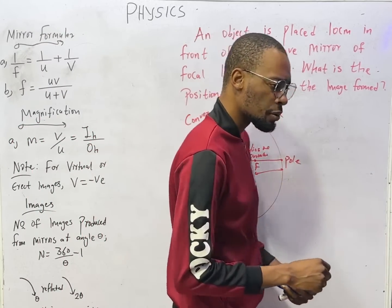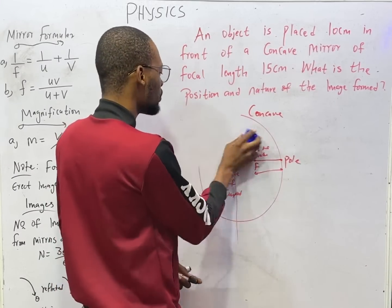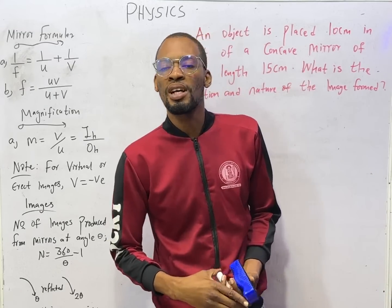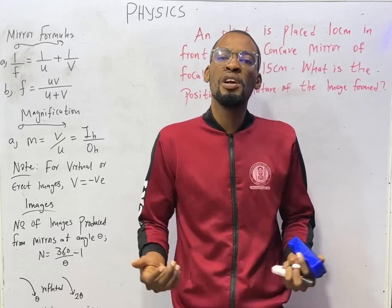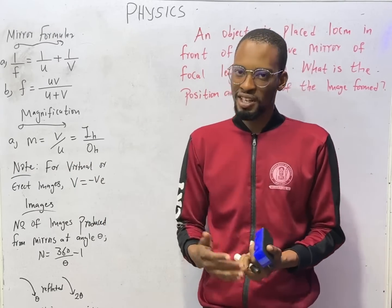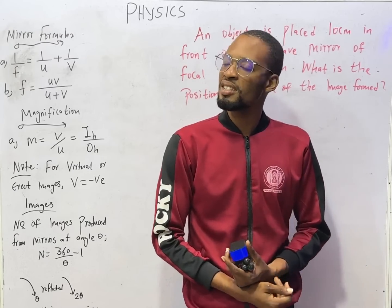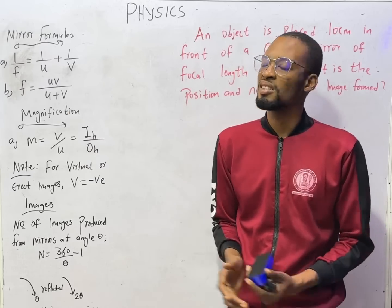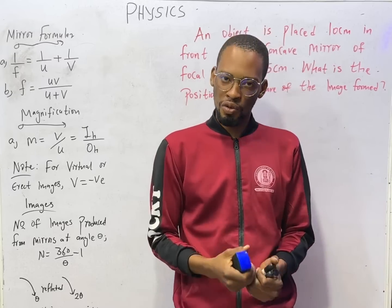Ladies and gentlemen, in mirrors there are times where you would have to calculate the focal length, the image distance, or the object distance. These are the things you would be required to look for when it comes to the mirror formula, and the mirror formula is simple: 1 over F equals 1 over U plus 1 over V. Where F is the focal length, U is the object distance, and V is the image distance. You can interchange this — 1 over F equals 1 over V plus 1 over U. It is mathematics; it doesn't change it.